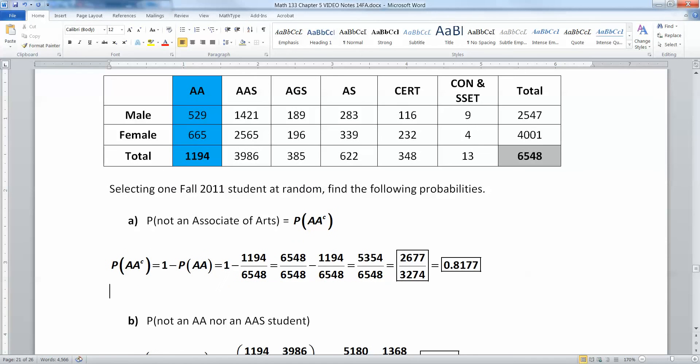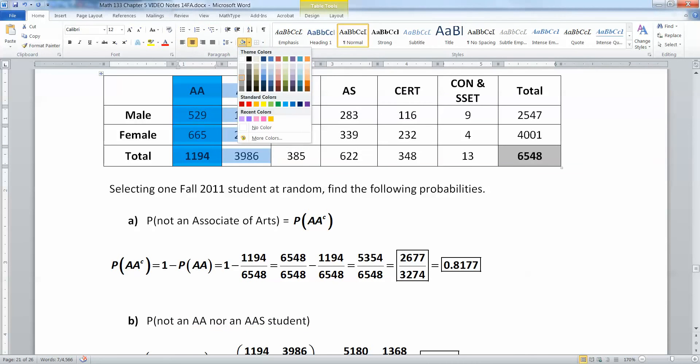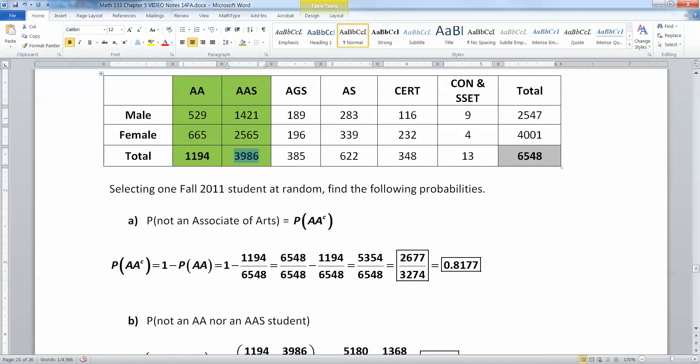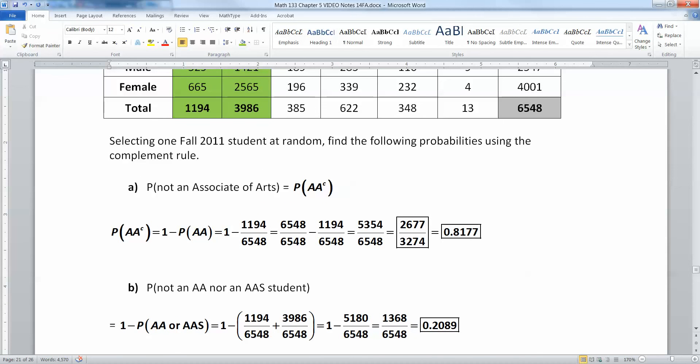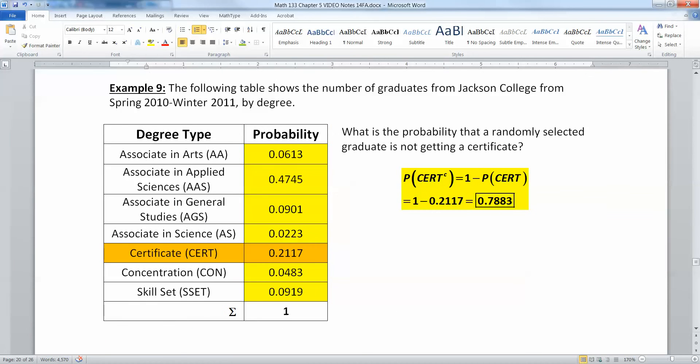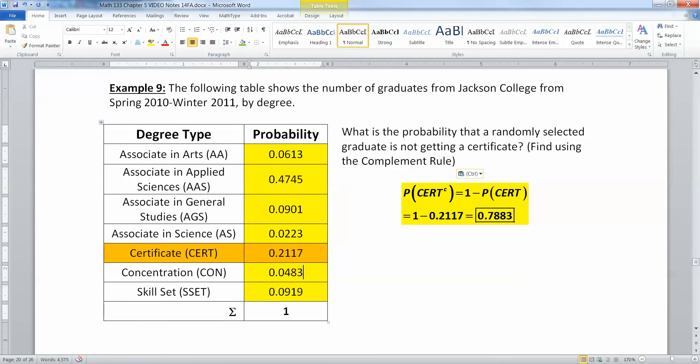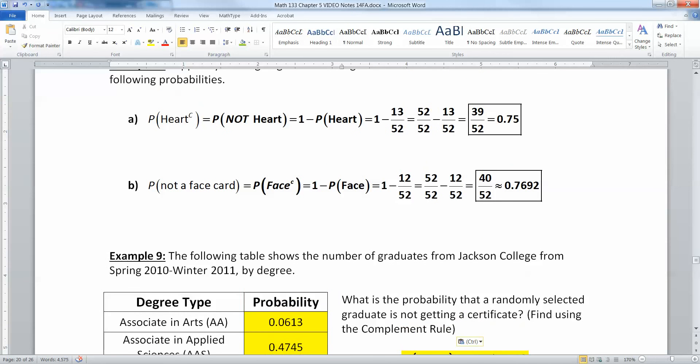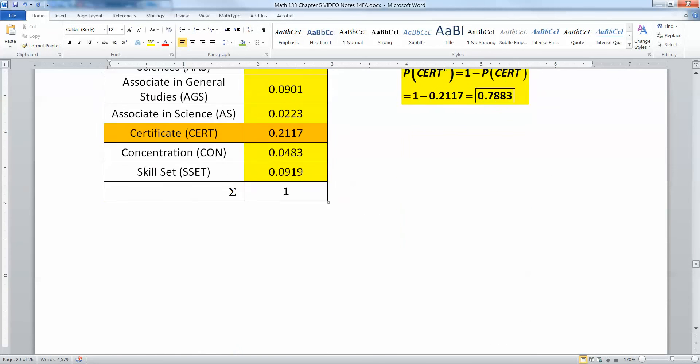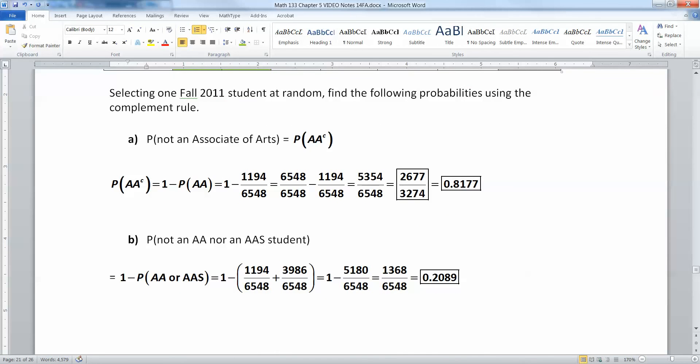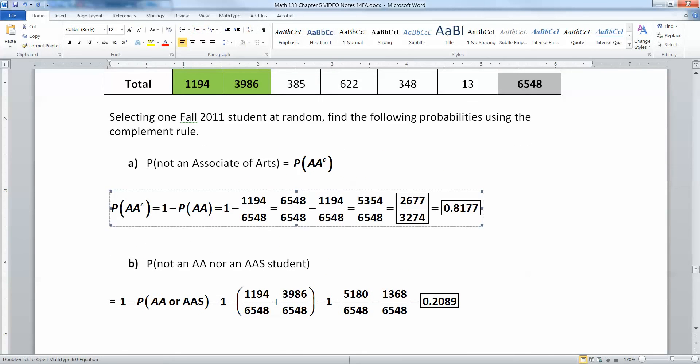Now let's make it a little bit trickier. Suppose I don't want an AA nor an AAS student. So that's both of these columns put together. If I don't want either one of these, you could add up these four. But we're trying to use the complement rule here. So I'm going to use the complement rule.